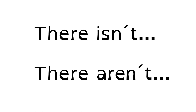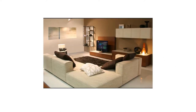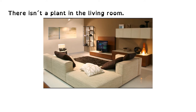We use there isn't and there aren't to talk about things that we can't see or to say things that don't exist. Let's see some examples. Look at this living room. Can you see a plant in the living room? Is there a plant in the living room? No, there isn't. So we say there isn't a plant in the living room.